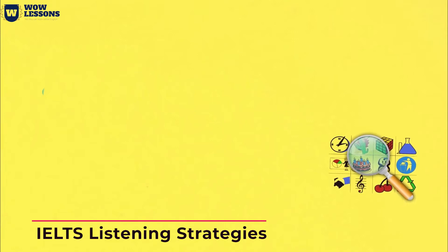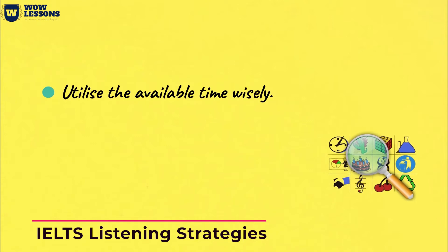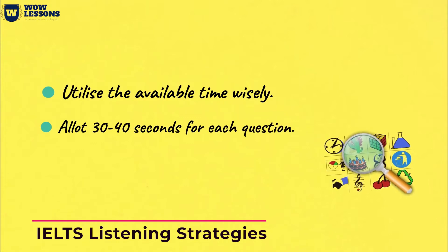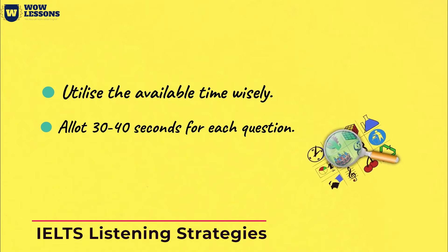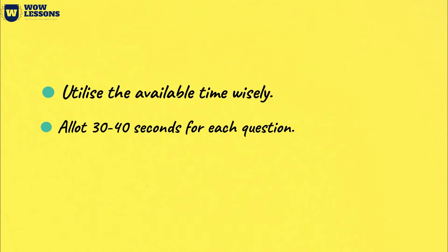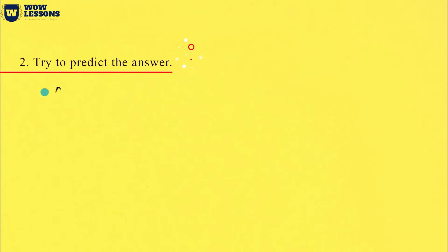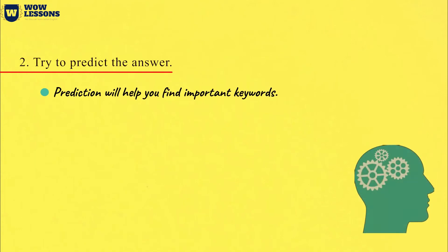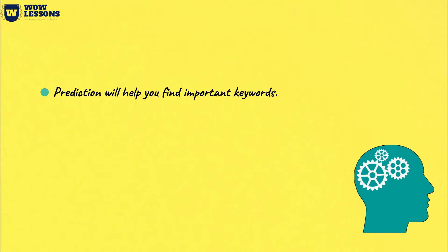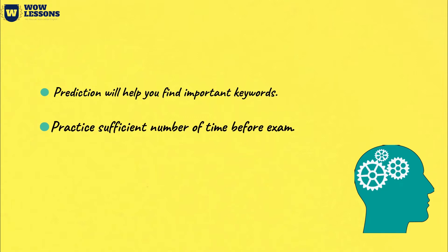First, listen carefully to the moderator to understand what questions you should pay attention to. For example, you will be told: 'First you need some time to look at questions 1 to 7.' There is no need to read the questions beyond the 7th — they will give you more time to read the following questions later. Within the allotted time, you should spend 30 to 40 seconds to analyze each question. For a thorough analysis, you need to determine the type of question and understand how to answer it. Also, during the analysis, you should find the keywords on which you will concentrate while listening to the audio. Try to predict the answer — this should also be done during the analysis of questions. You just need to imagine what response to expect. This will help you find keywords. If you practice applying these techniques before the exam, it will not be a big problem for you.